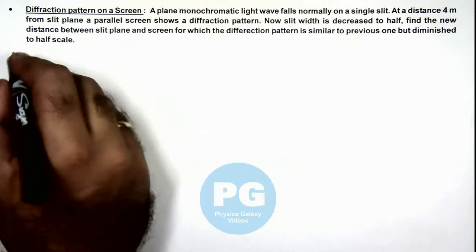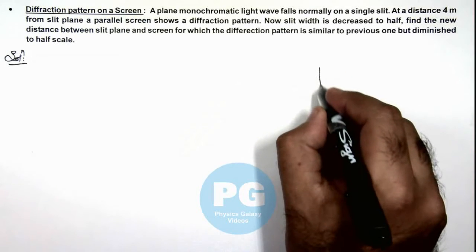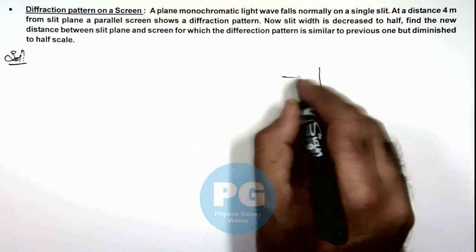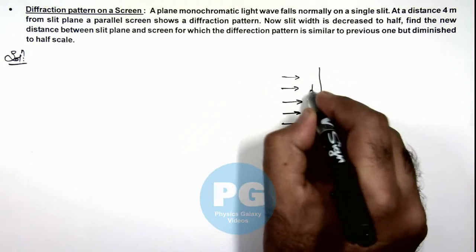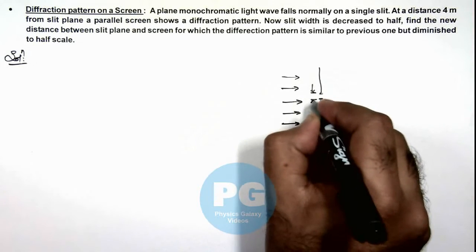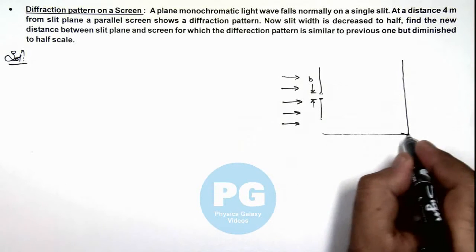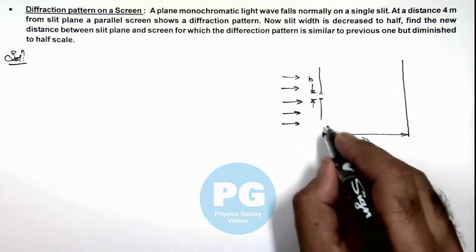Now in this situation, if we draw the picture of a single slit setup on which light is incident onto it, we consider the slit width to be equal to b, and this is the screen which is located at a distance d from the slit plane.